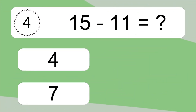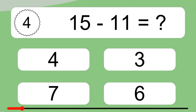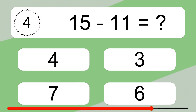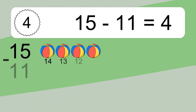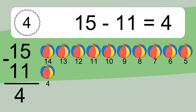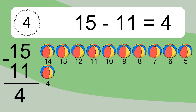15 minus 11 equals what? 15 minus 11 equals 4. Let's count it: 14, 13, 12, 11, 10, 9, 8, 7, 6, 5, 4.